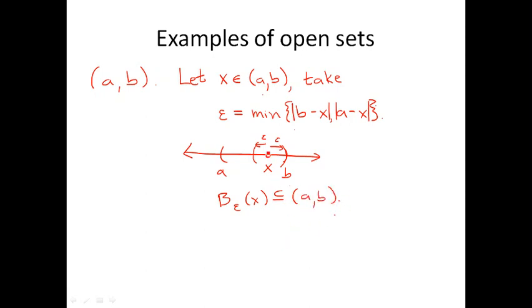This argument works for any value of x. The epsilon will change, but no matter which x I take inside this interval, I can always find some epsilon neighborhood which satisfies this subset condition. So this shows that the open interval (a, b) is, of course, an open set — as the name would suggest.